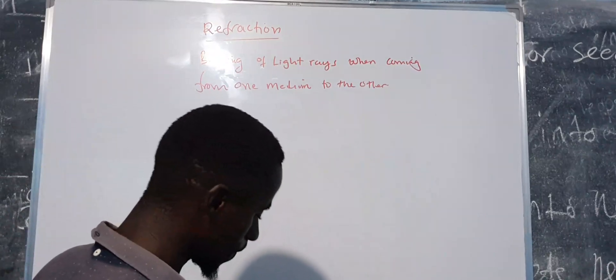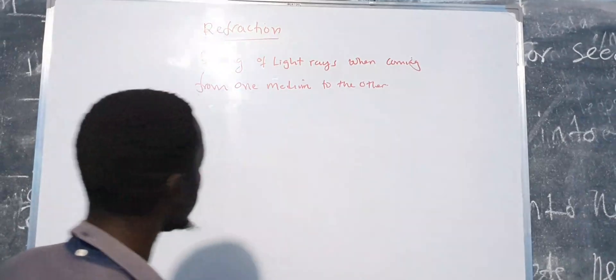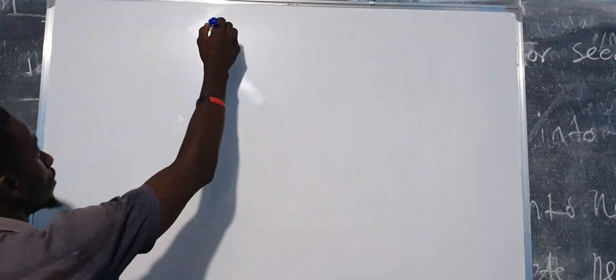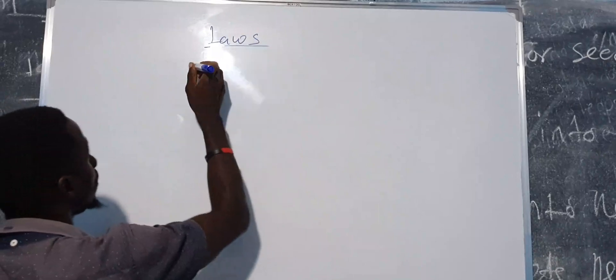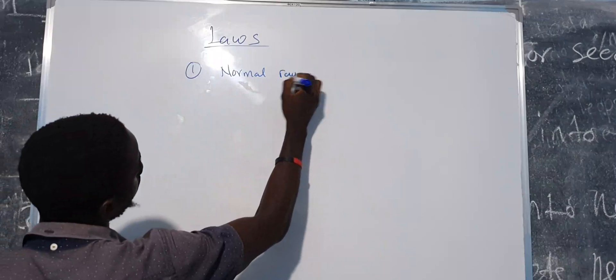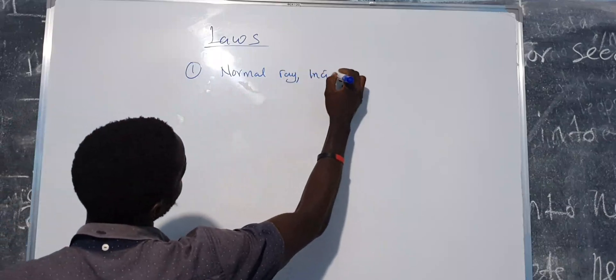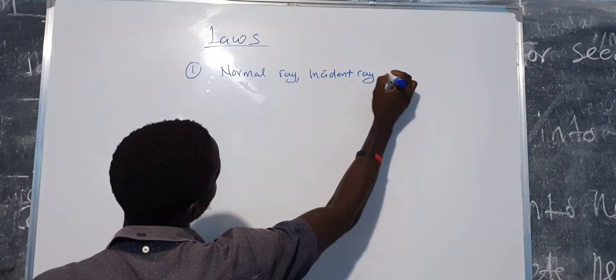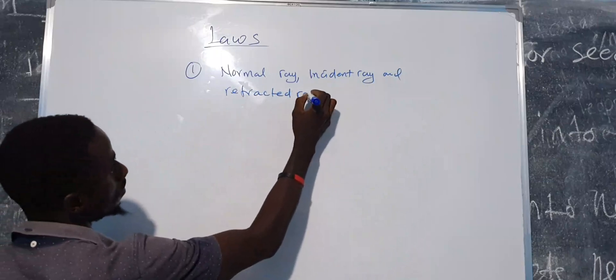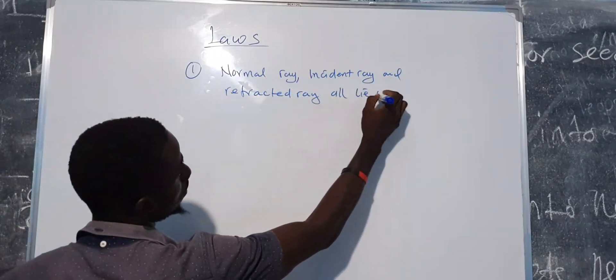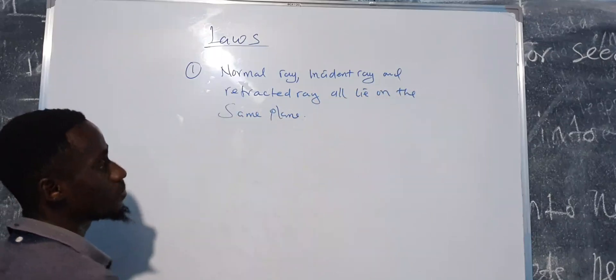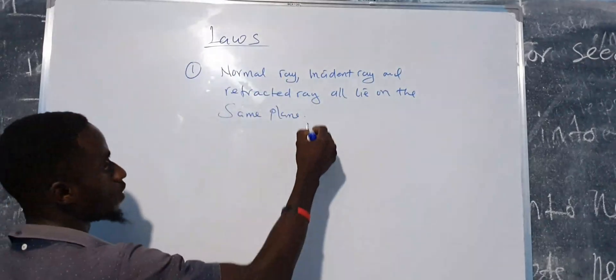Next is the two laws of refraction. The first law says that the normal, the incident ray, and the refracted ray, they all lie on the same plane.